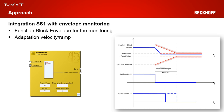We use the function block Envelope to create our ramp monitoring. The function block has four parameters shown in the left picture, and I also included the function block diagram in the right-hand corner. The Envelope function block creates an envelope from the absolute value of the input. As long as the input value stays within the envelope, the function block output is true. If it violates the envelope, the output goes to false.